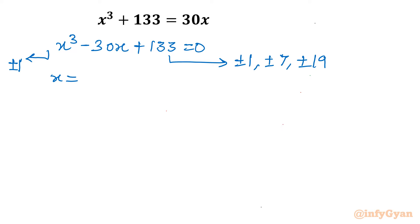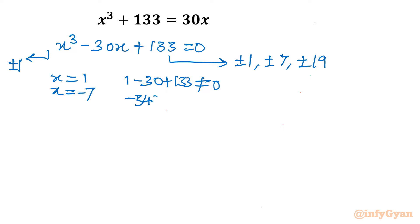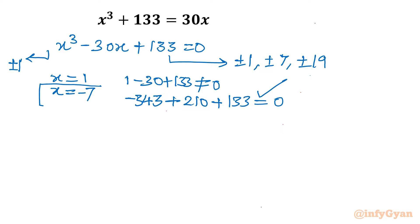We need to put only a few values to find the first base solution. Putting x equal to 1 won't provide a solution — it is nonzero. Putting x equal to 7 also gives nonzero. Let me put x equal to minus 7: minus 7 cubed is minus 343, minus 7 times minus 30 gives plus 210, plus 133. Adding these gives 0. So x equal to minus 7 is our real base solution.